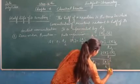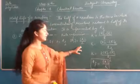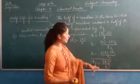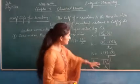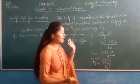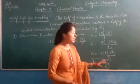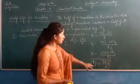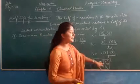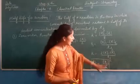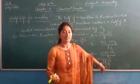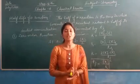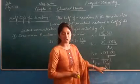We find that t half equals R-naught over k. This is the half life expression for a zero order reaction. From this expression, we can conclude that the half life of a zero order reaction is directly proportional to its initial concentration and inversely proportional to its rate constant.